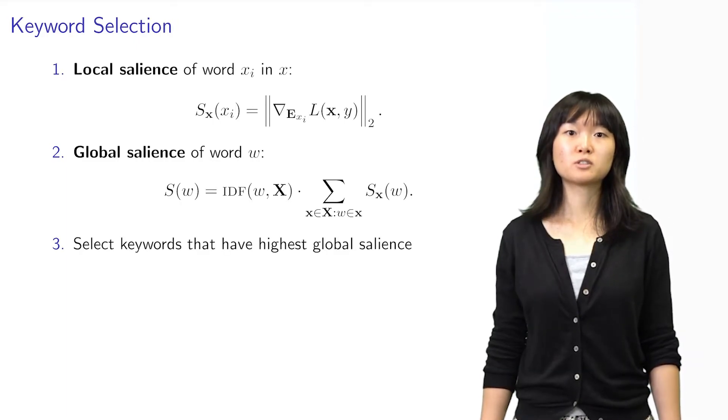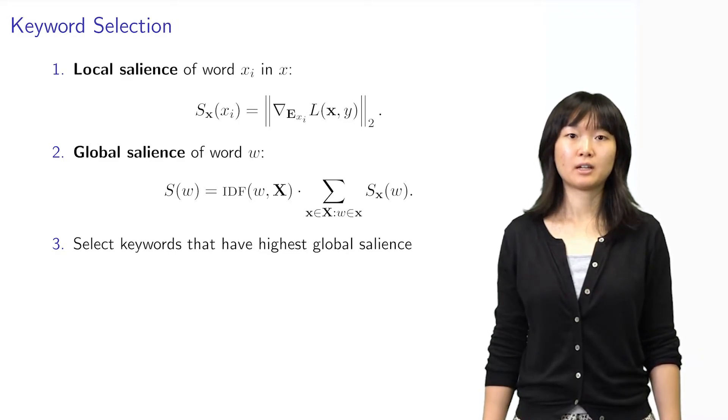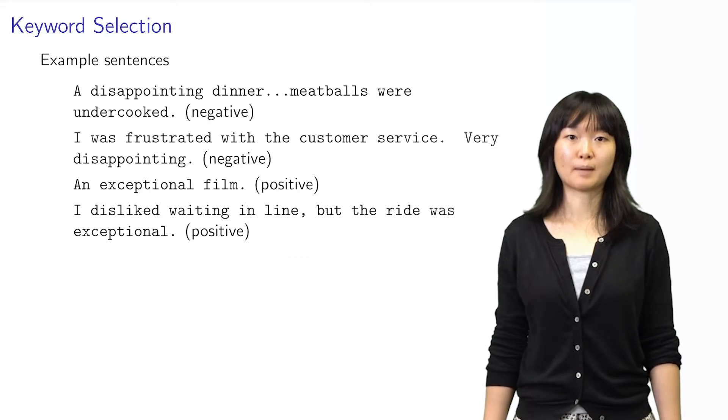Finally, we choose the words with highest salience as our keywords. The number of keywords is a hyperparameter that controls the time length of a CLIME session.